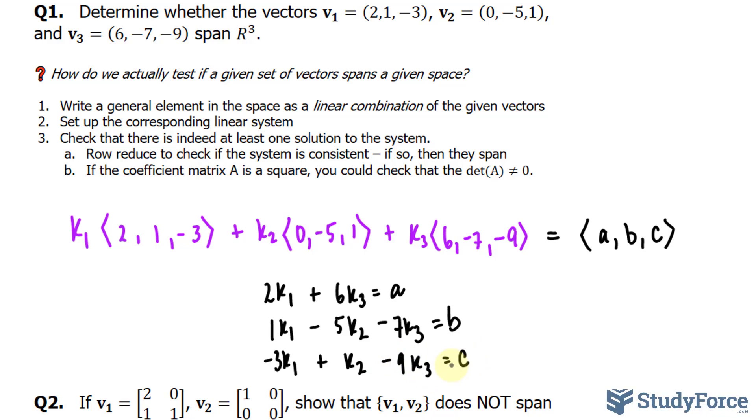We'll transform this into a matrix, and here's what you should end up with. 2, 0, and 6. Remember, there's no k sub 2 here, so we put a 0 instead. A, 1, negative 5, negative 7, and b, negative 3, 1, negative 9, and c.